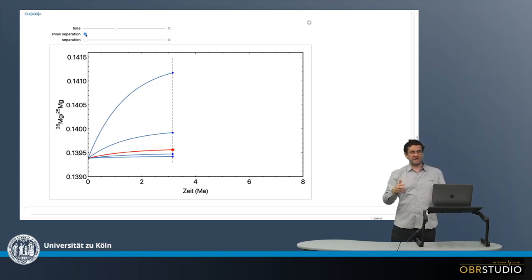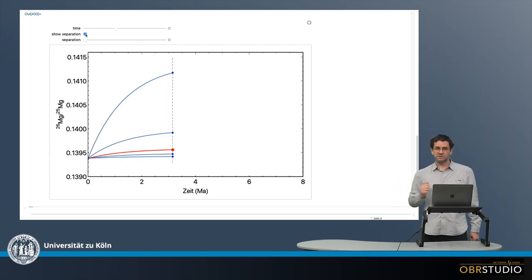The two lines above could be CAIs or the mesostasis of chondrules. The two lines below could be something like pyroxene or olivine, which only have very little aluminum but a lot of magnesium.